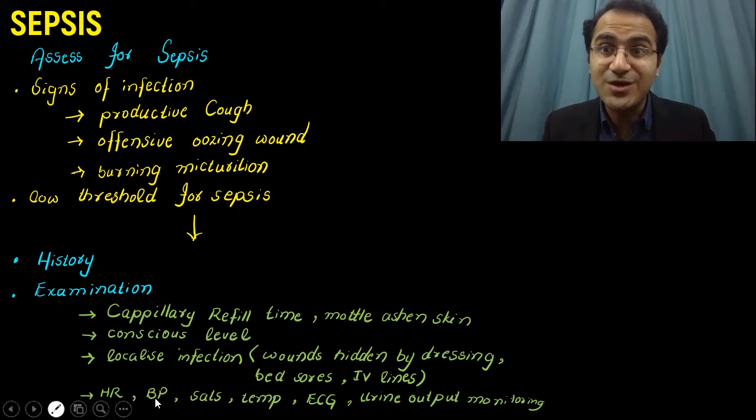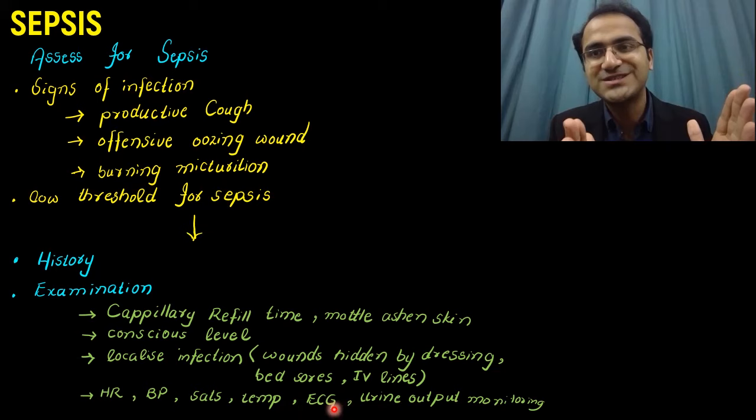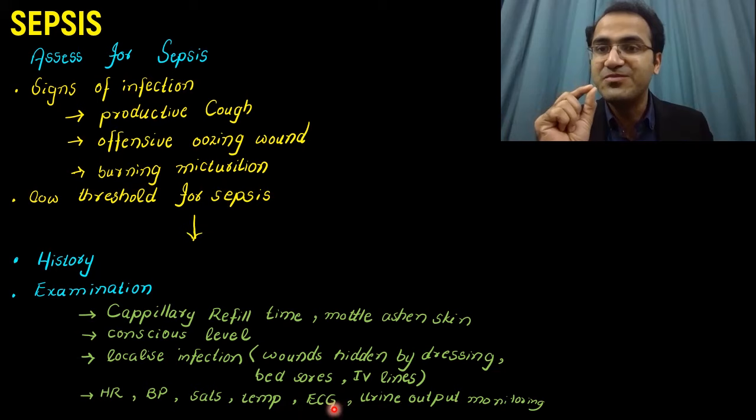Check vitals: heart rate, blood pressure, oxygen saturation, temperature, and ECG. Urine output monitoring is very important. On the basis of these vitals, we classify the patient into a high risk category, a moderate risk category, or a low risk category — these are the vitals upon which we base our classification and risk assessment.